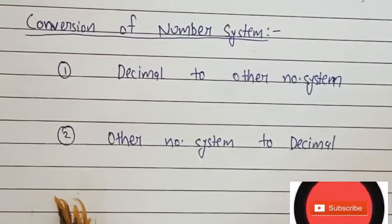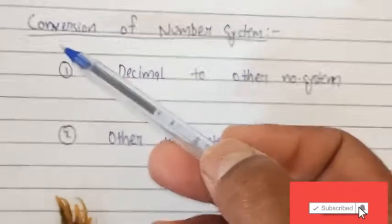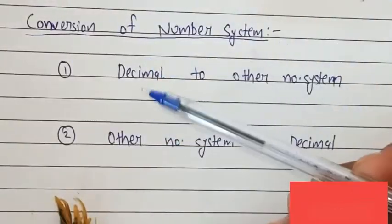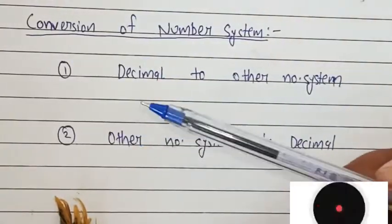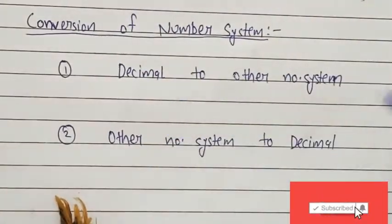Welcome to Digital Electronics Lecture 2. Today we are going to discuss the conversion of number systems. There are two kinds of approaches for conversion of number systems. The first one is decimal to other number systems, and other systems to decimal.